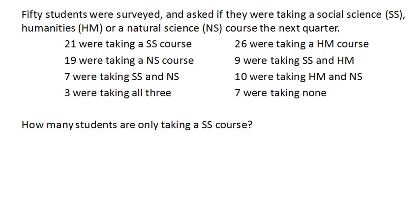50 students were surveyed and asked if they were taking a social science, humanities, or natural science course the next quarter. Here are the survey results. We're wondering how many students are only taking a social science class, because these 21 who are taking a social science class may have also been taking some others.